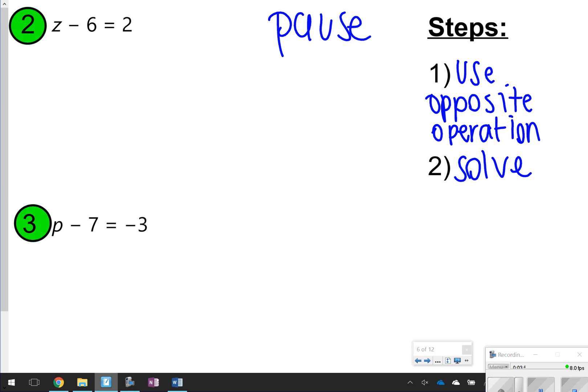Okay, so for number 2, I see z - 6 = 2. I notice that 6 is on the same side as z. To get the 6 away from it, away from the z, I've got to do the opposite operation here. So I'm going to do a +6 because that's the opposite of a -6. Whatever I do to one side of the equation, I will also do to the other side of the equation to make it equal. -6 and +6 cancels out. So all I'm left with is z. And over here, I have 2 + 6. And I know 2 and +6 will give me 8. My answer for number 2 is z = 8.